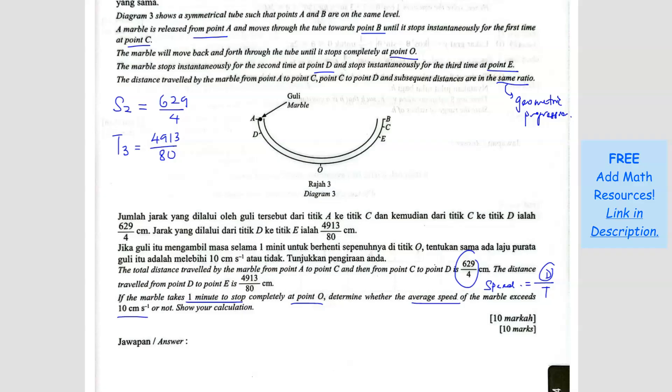From A all the way to O until it stops, how much has it travelled? Because we don't know how many times it swings, we can use sum of infinity to find the total distance. So once we find the sum of infinity, we divide by the time, and we should get the speed. The question is, how do we find sum of infinity? We know the formula is A over 1 minus R, so we need to find A and R first.